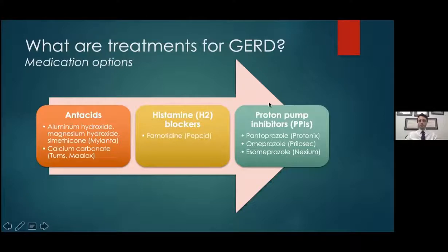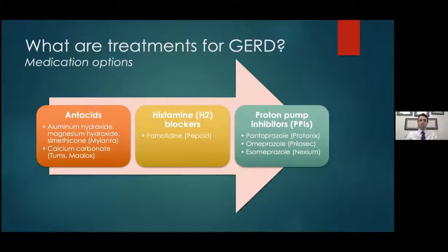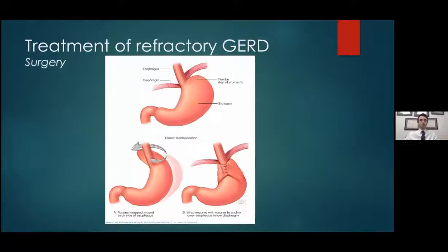The final step up are proton pump inhibitors, or PPIs. These are slightly newer, although they've been around for a while, and they suppress acid in a more potent way. These medications should be used on a daily basis, ideally 30 to 60 minutes before the first meal of the day. Examples include pantoprazole or Protonix, omeprazole or Prilosec, and esomeprazole or Nexium.